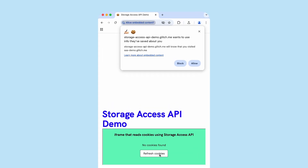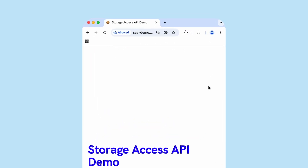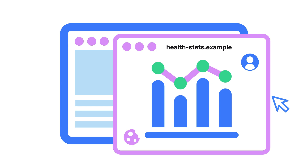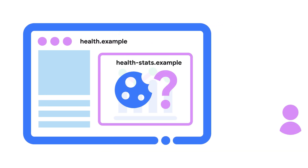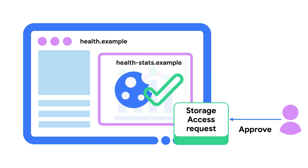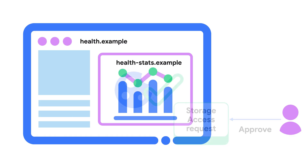Another API that you might want to check out is the Storage Access API. The Storage Access API allows embeds to request unpartitioned storage access permission from the user. In our example, the user logs into healthstats.example with top-level context, then goes back to health.example. The healthstats.example embed calls the Storage Access API. If the user approves, the embed can get access to the unpartitioned cookie that was set within the top-level context, and the embed can render as expected.